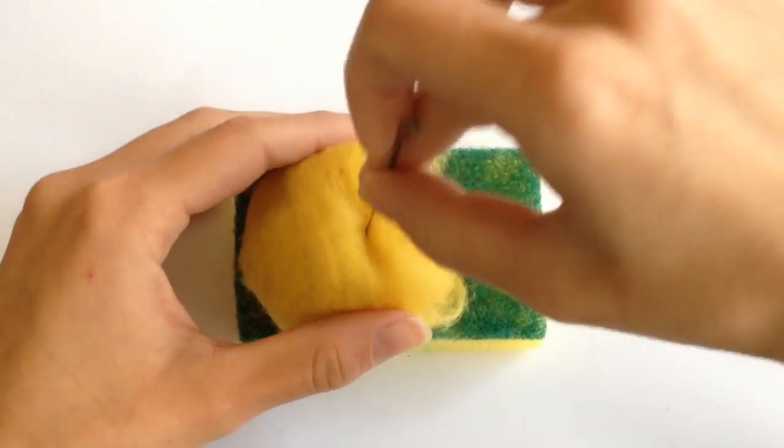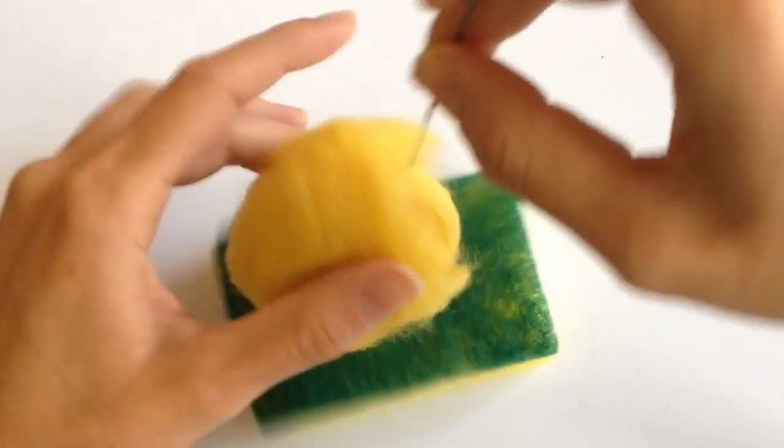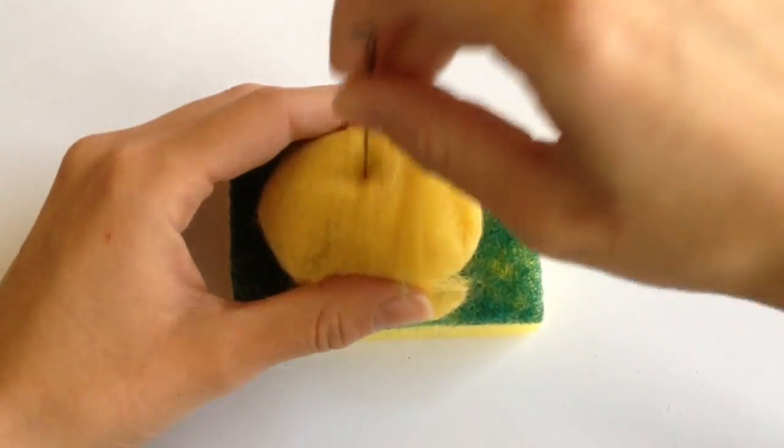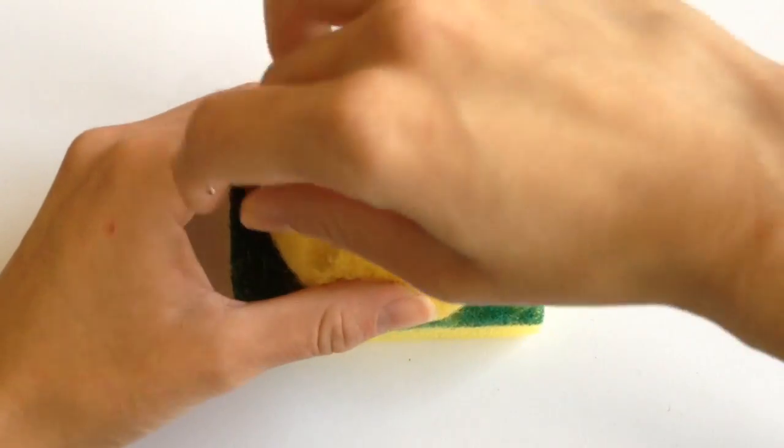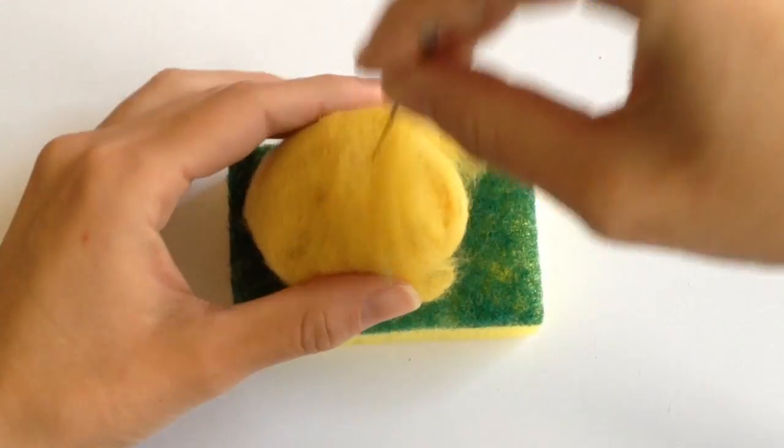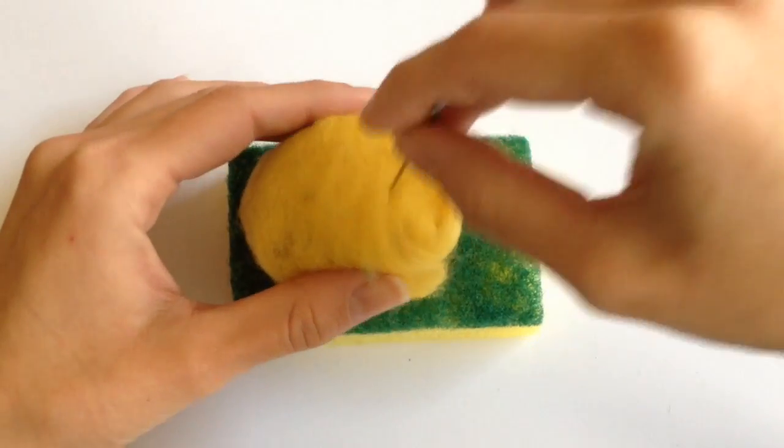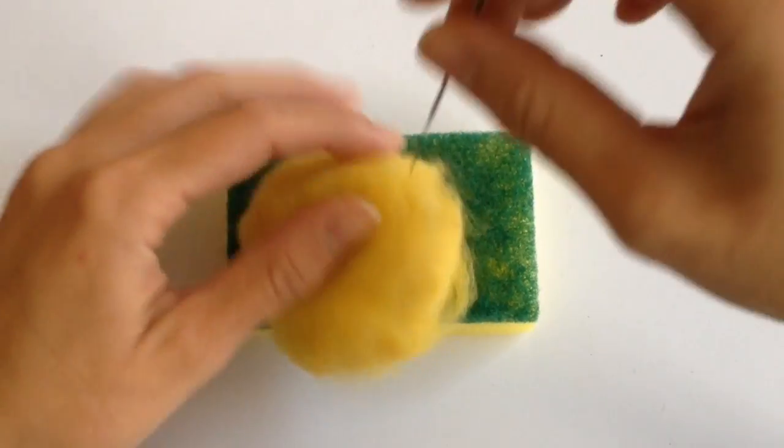Taking your felting needle, you're going to poke your little plushie all over the place to make a nice solid ball. There is really no technique to doing this other than avoiding your fingers. You don't really want to poke yourself, so be careful when you do this.